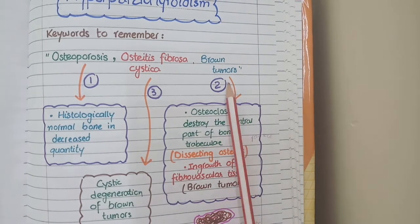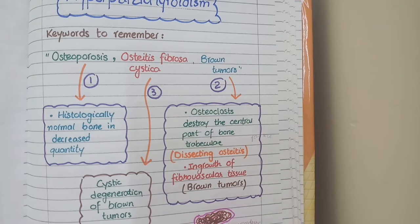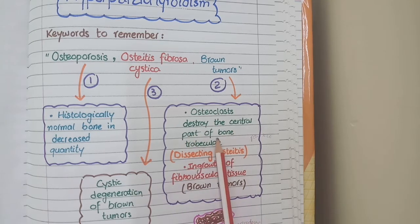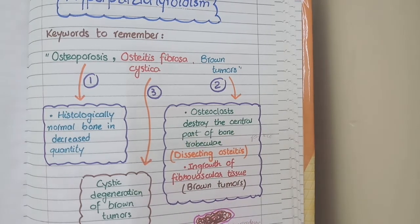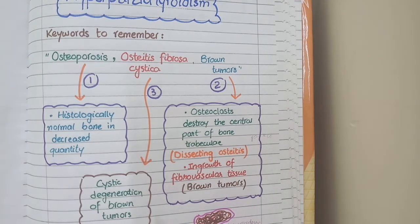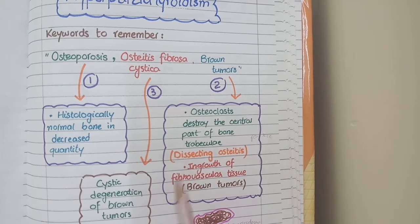The next lesion is brown tumors. Hyperparathyroidism causes activation of osteoclasts, and these osteoclasts cause degradation or destruction of the central parts of bony matrix or bony trabecula. This leads to railroad-like cavitations in the bony matrix that we call dissecting osteitis — railroad-like dissection in the bony matrix.